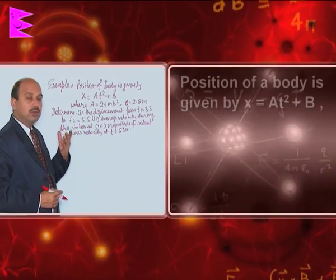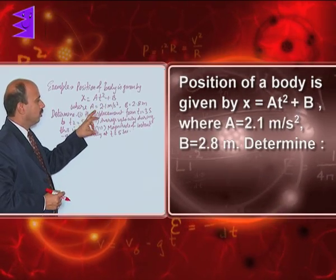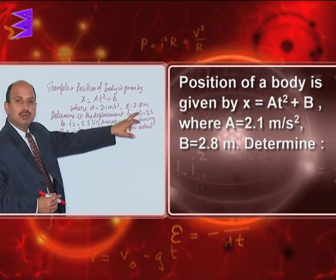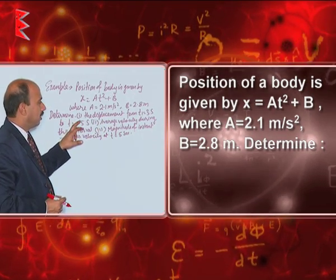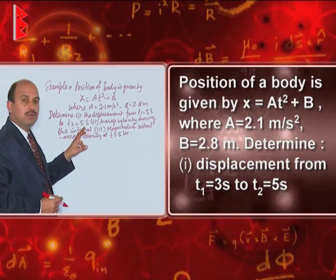See here, position of a body is given by x = At² + B, where value of A is given to you, B = 2.8 meter. Then determine the displacement from t₁ = 3 seconds to t₂ = 5 seconds.